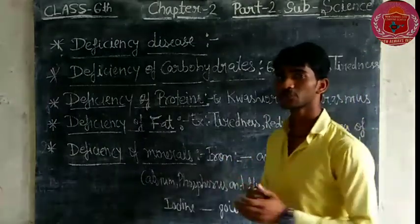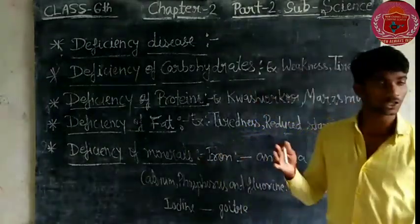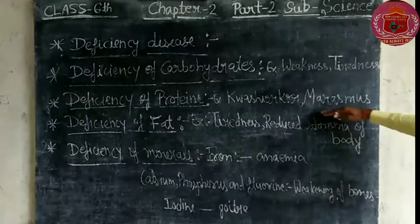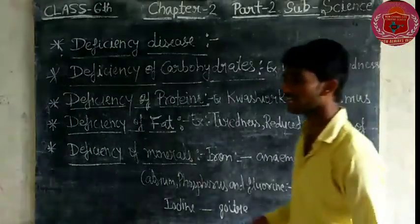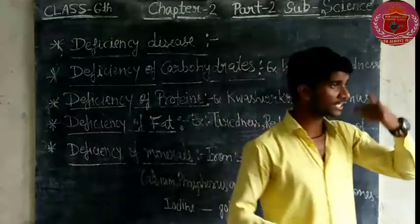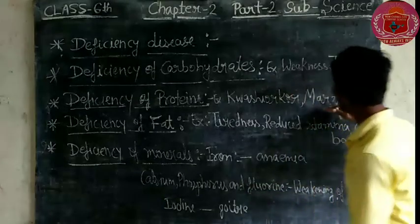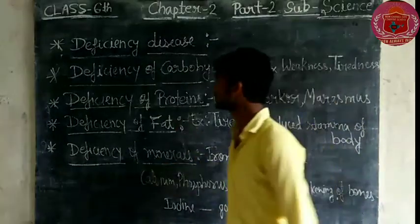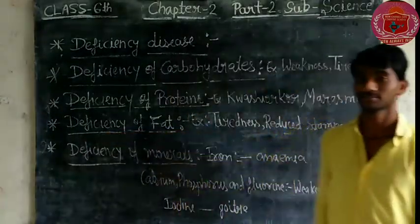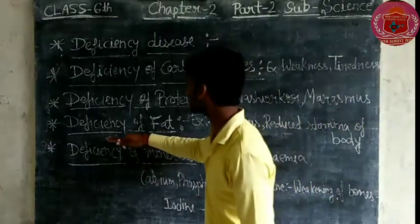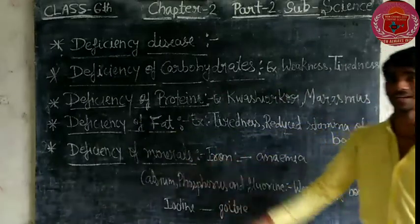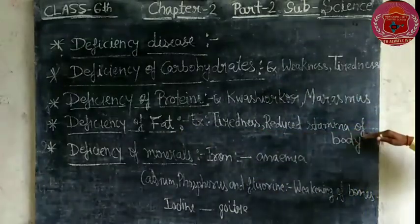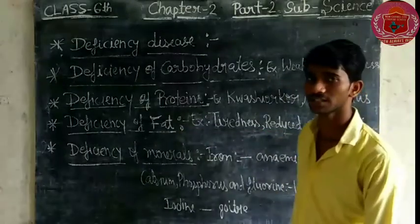When the body is swollen or bloated, that is one sign. The second protein deficiency disease is Marasmus, which causes children to have dark circles. There is also a deficiency of fat, which causes tiredness and reduces the stamina of the body.